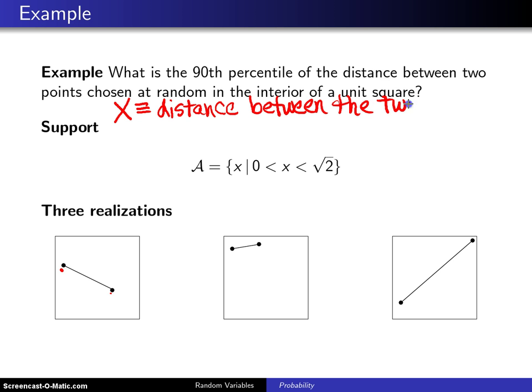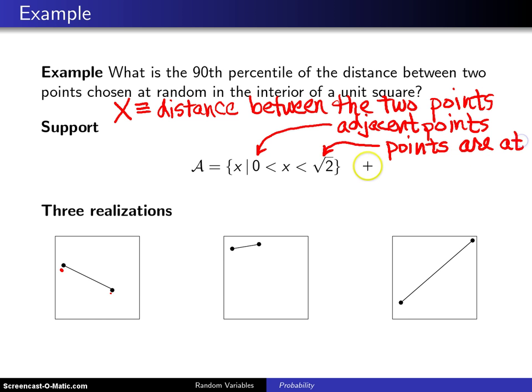Now this distance is going to be a continuous random variable. It can run anywhere from zero, and zero would correspond to adjacent points, all the way up to the square root of two. The square root of two would cover the situation where one point is in one corner and the other point is in the opposite corner. So this would correspond to the case where the points are at opposite corners of the unit square.